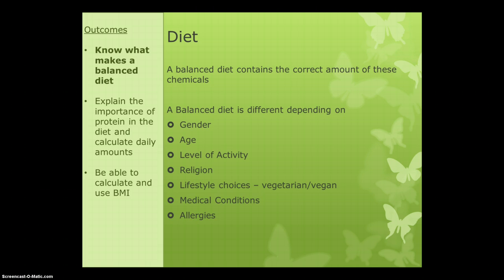How much of certain things different people need will depend on a lot of factors. Gender has an effect — men need more calories in a day than women. Age has an effect: teenagers and children need more proteins than older people because they're still growing. Level of activity also matters — if you have a very active job, you will need more carbohydrates. If you sit down a lot, you'll want to avoid too many carbohydrates and sugars because you're probably using less of them.